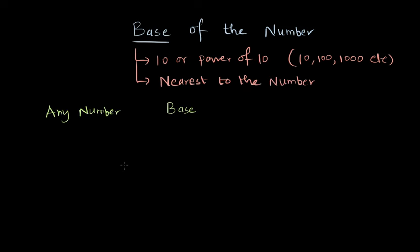So for example, let's try and find out the basis of few numbers. So let's say we have this number 98. Now the closest power of 10 that we can find is 100. What about 79? Again the base will be 100. What about 15? The base is going to be 10 because it's the nearest power of 10. What about number 7? Again the base will be 10.